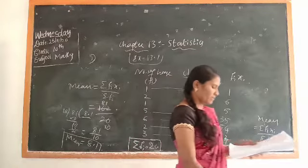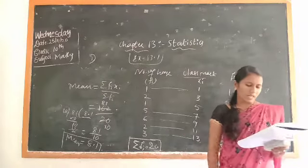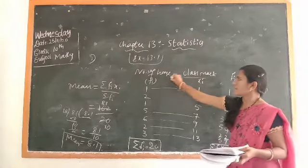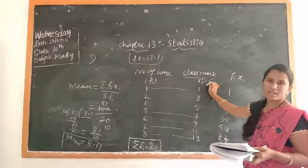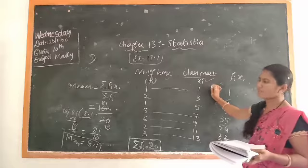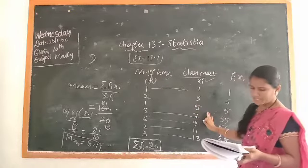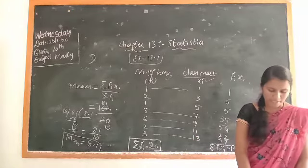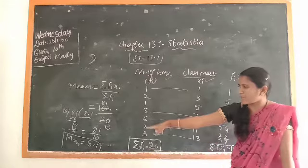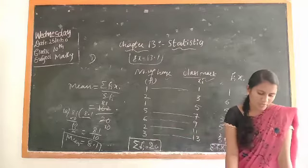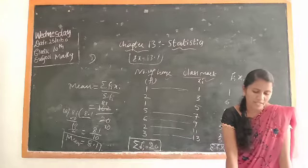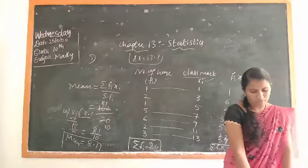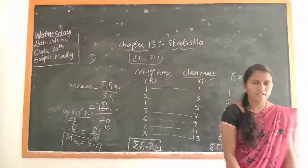Why we used direct method? Here I used the direct method because fi and xi are smaller numbers. If bigger numbers means you have to take the step deviation or assuming method, but here direct method. Number of plants per house is equal to 8.1. I think I explained these two questions, example problem and also first problem. Next class I will explain the remaining. Okay, thank you.